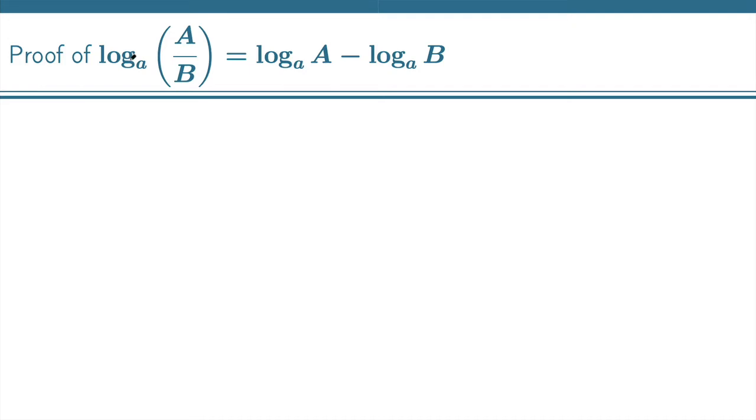For the proof that the logarithm of a quotient is the difference of the logarithms, we will rename two logarithms. We will call u the logarithm of a and v will be the logarithm of b.